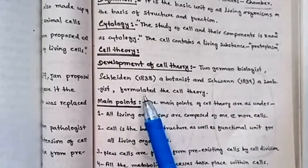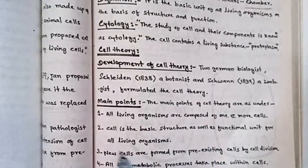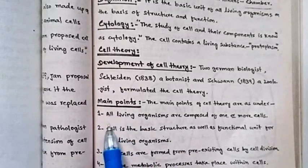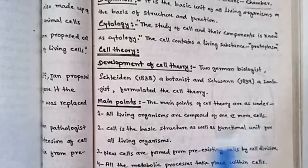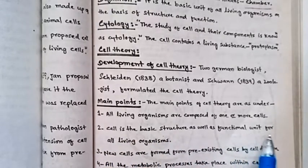Protoplasm formulated the cell theory. Now the main points: Point number one - all living organisms are composed of one or more cells. Second point - the cell is the basic structure as well as the functional unit for living organisms.